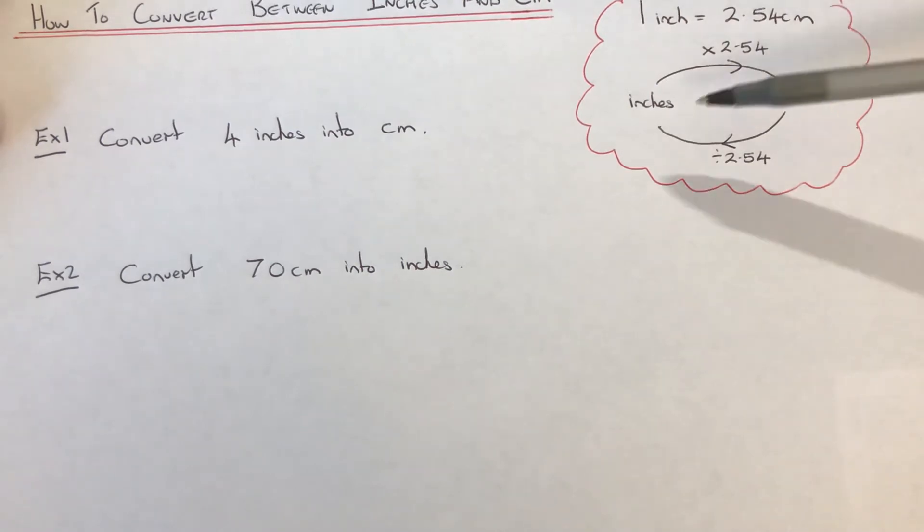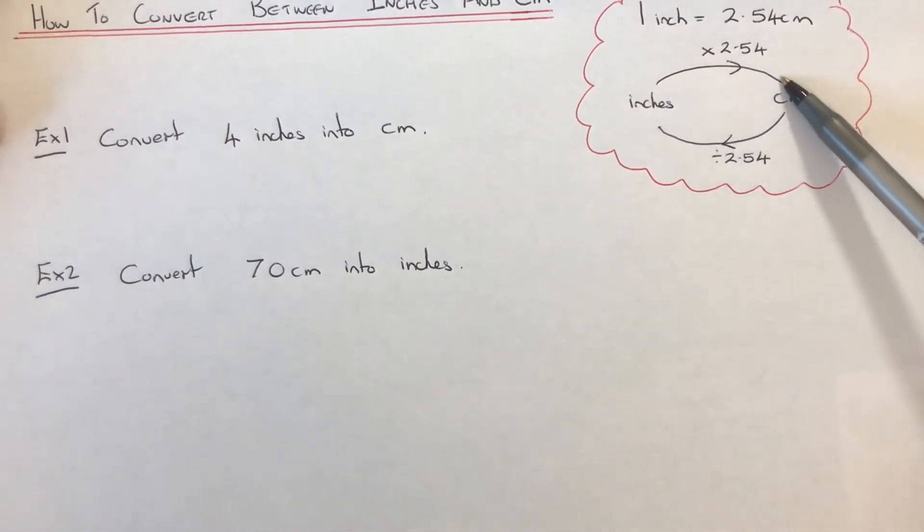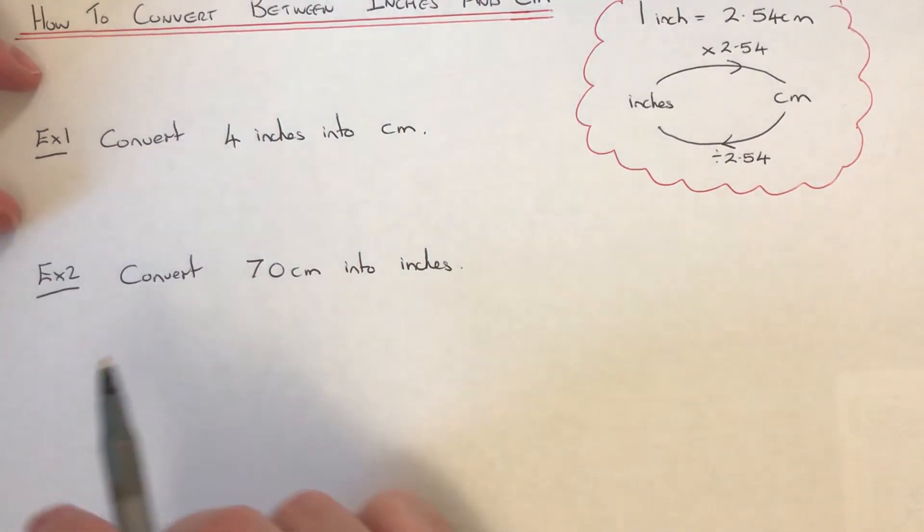This means if you're changing inches into centimeters, you will need to multiply the number by 2.54. And if you're converting back from centimeters into inches, then divide by 2.54.